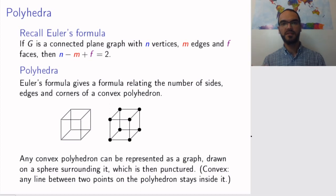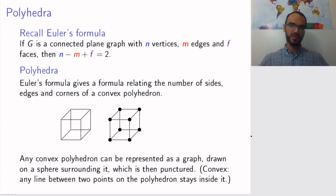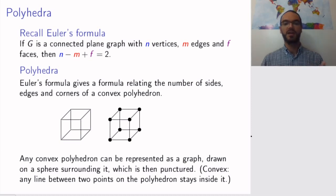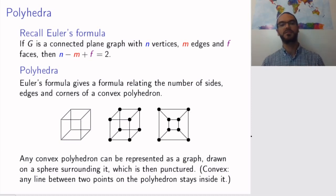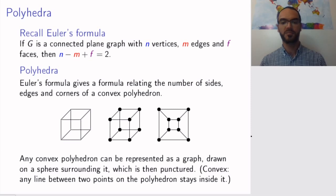So you get a graph that you can draw without crossings on a sphere. But we said last time that by punching a hole in one of the faces of the graph and pulling it open — or, if you are less violent, by using stereographic projection — you get a plane graph. So a polyhedron gives you a plane graph, and therefore we can use Euler's formula for polyhedra.